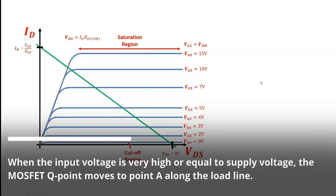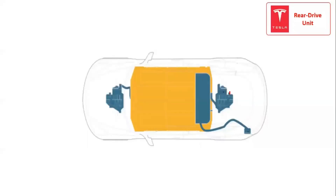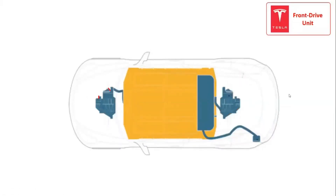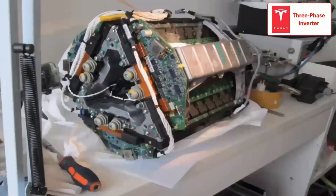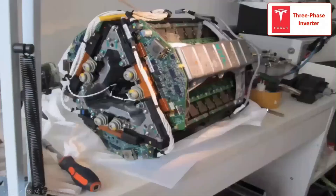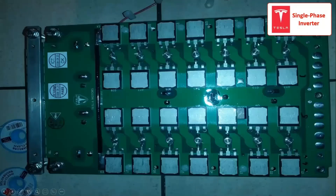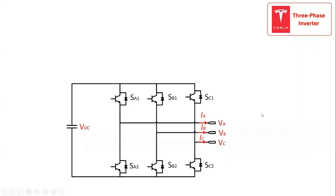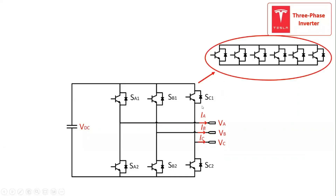The front drive unit is located between the rear wheels and the front drive unit is located between the front wheels. The Tesla Model S uses a 3-phase 2-level inverter topology with an input battery voltage of 400 volts, arranged in a triangular structure. The conventional 3-phase 2-level inverter consists of a DC-link voltage and 6 switching power semiconductor devices. In this case, a conventional 2-level inverter structure with 6 IGBTs paralleled per switching device to handle the high current.